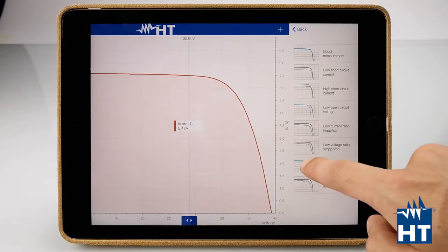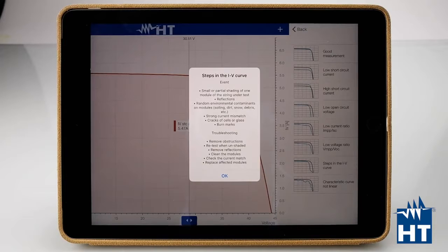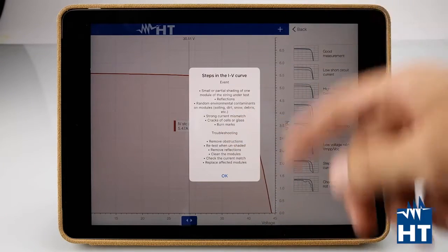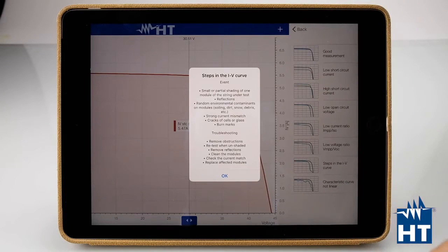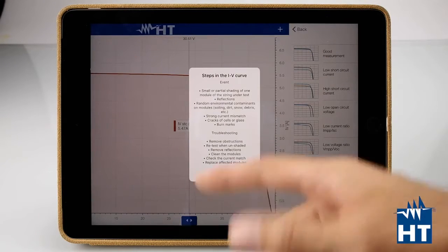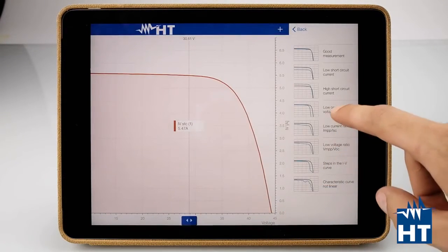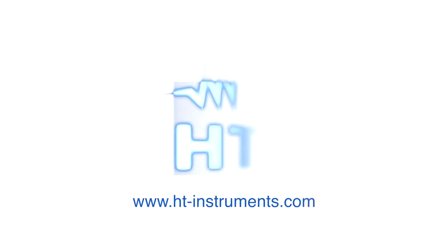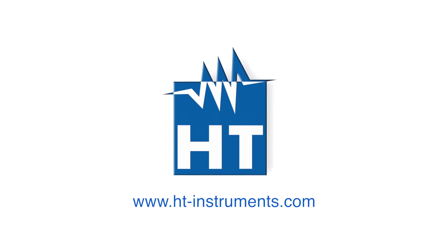Let's say, for example, that I have this kind of curve. Now the app tells us which kind of problem we may have. Small partial shading of one module of the string under test, reflections, random environmental combinations like dirt or snow, strong current mismatch, or crack or cell or burn marks. So here with the wiki you can find the more common problems and it will be very easy to find your solution. So here we go.